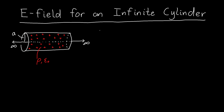So how do we do this? The first question is how much symmetry do we have, and in particular do we have enough symmetry to use Gauss's law? In this case yes — we have infinite translational symmetry, so we can use Gauss's law, which makes our life a whole lot easier than if we had to do this by brute force integration.